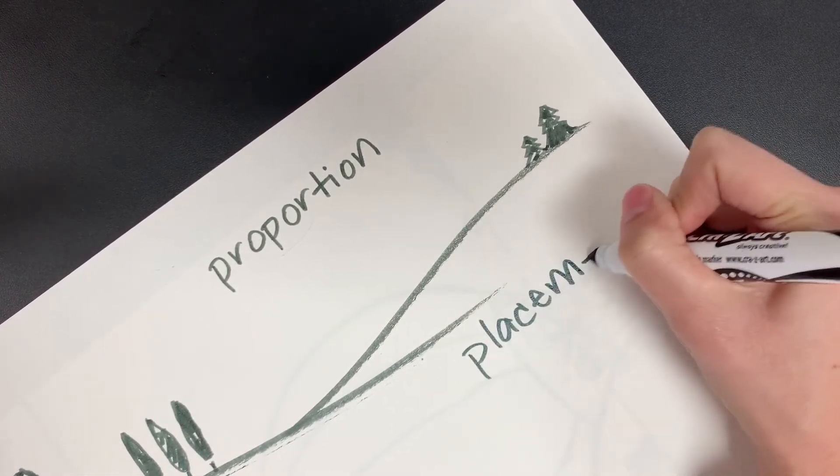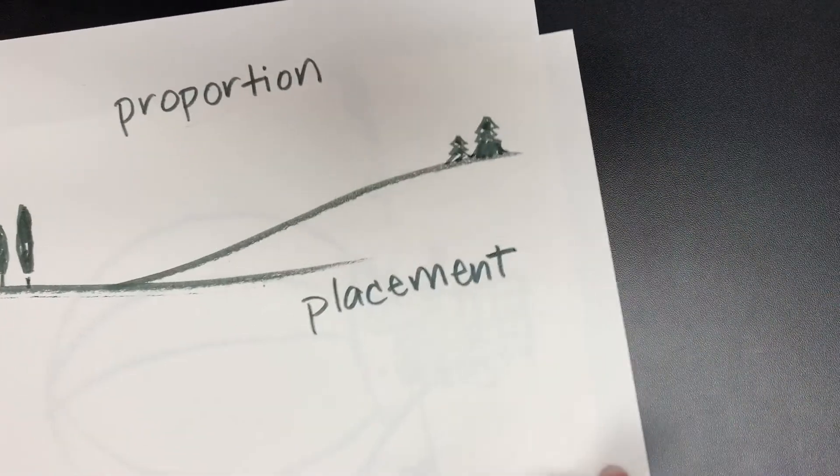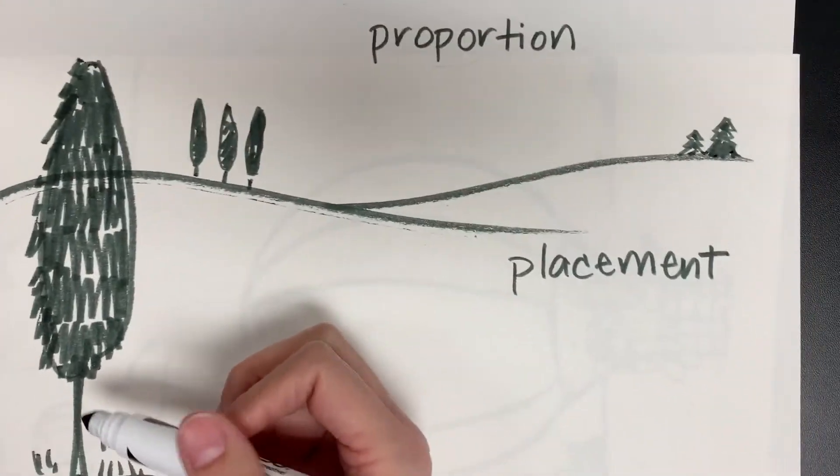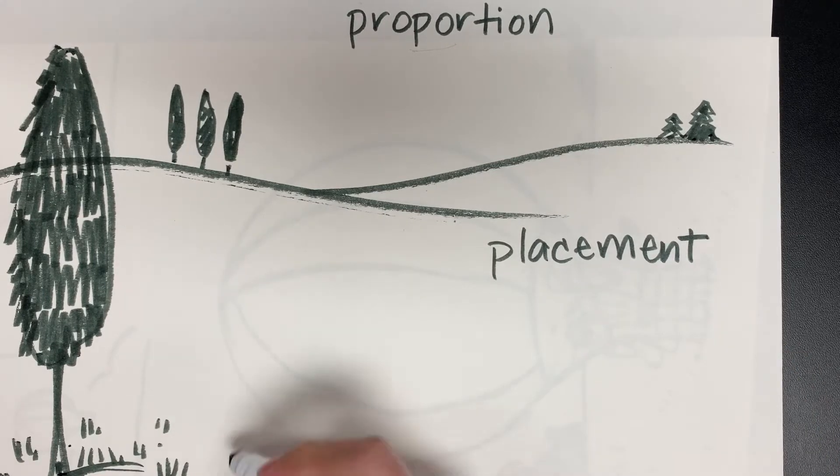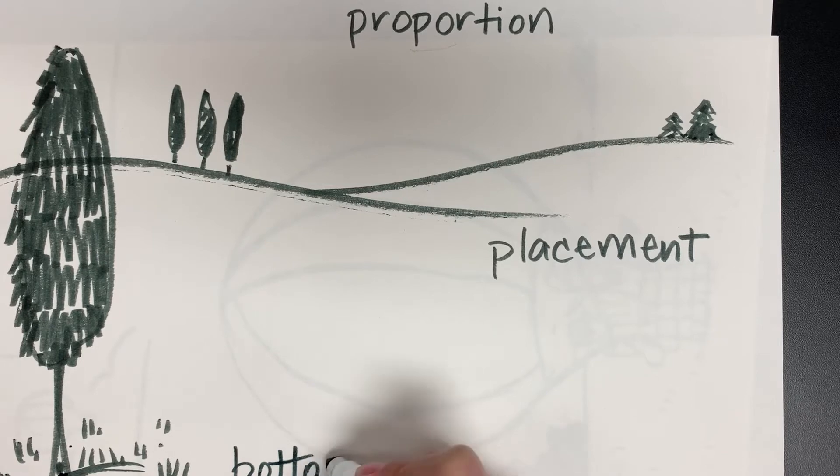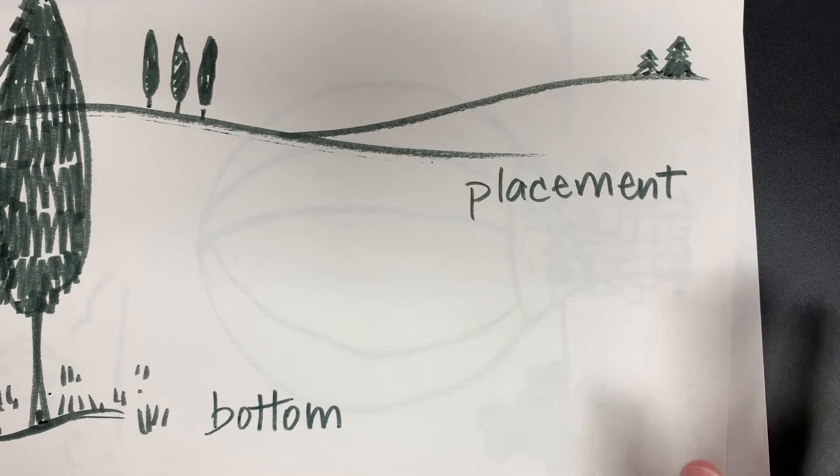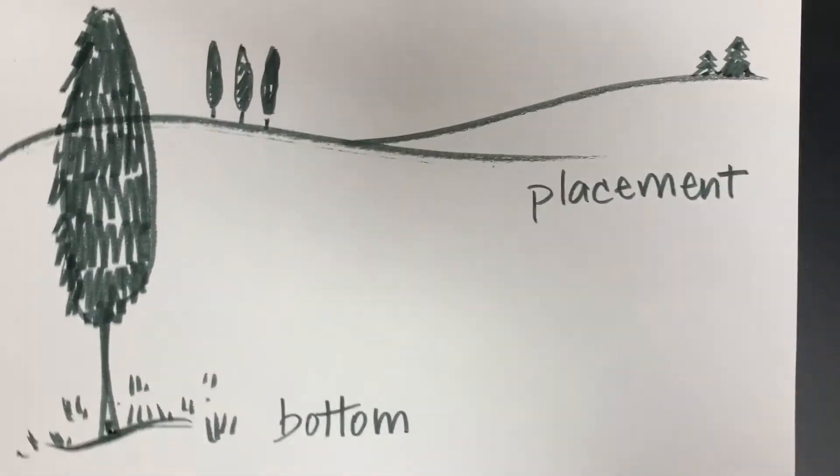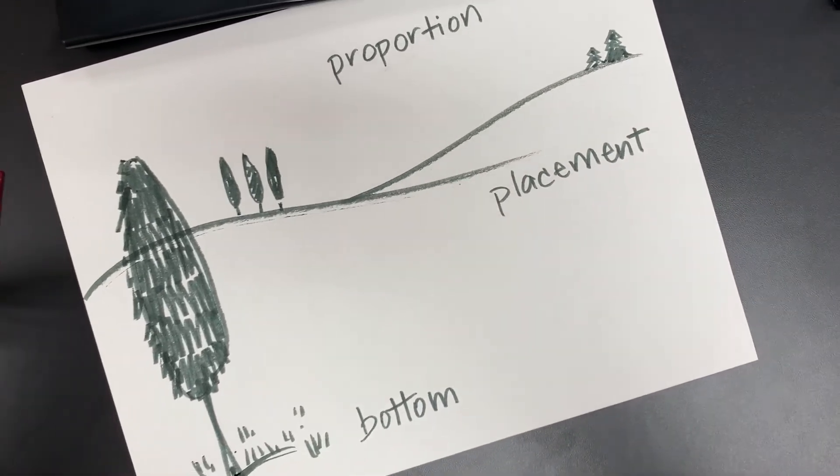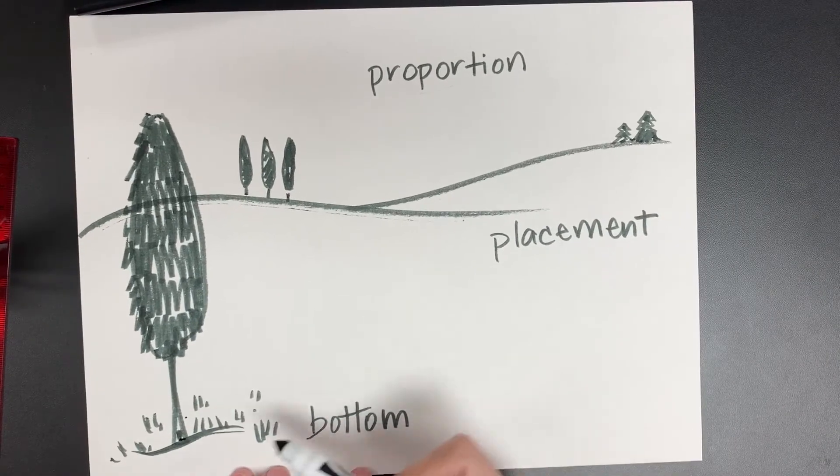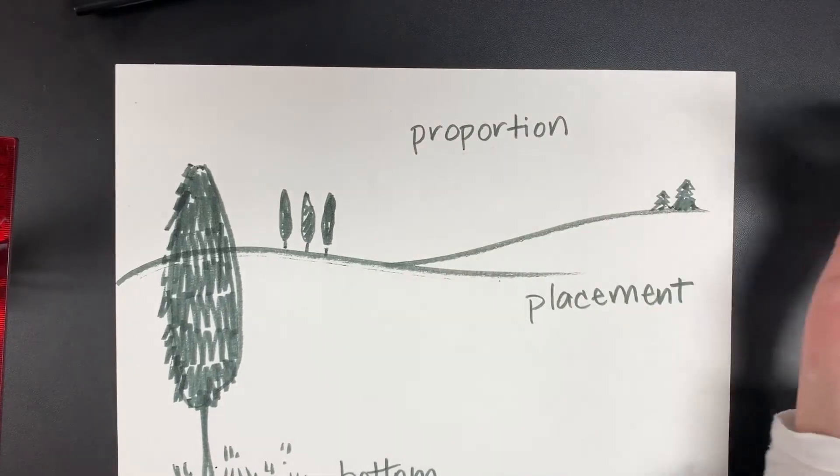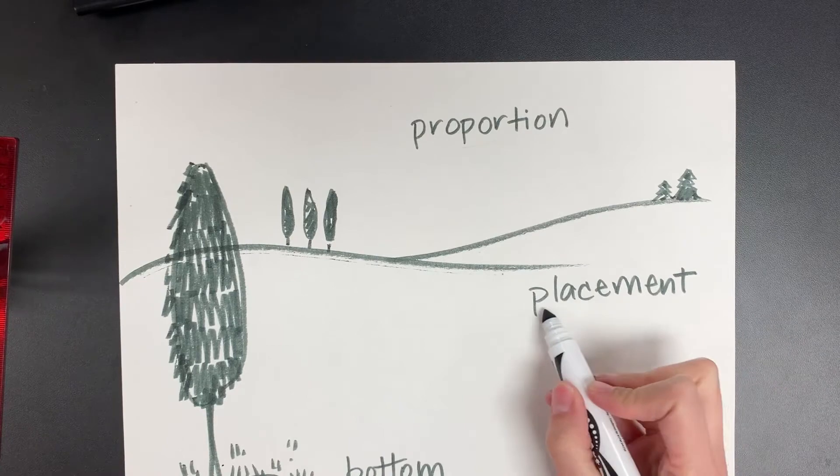Another important word is placement. You've seen me using this word placement an awful lot. Placement has to do with where we put our shapes on the page. If we are drawing, for example, with this tree that's close to us, its placement is near the bottom of our piece of paper or our canvas, if we're painting on a canvas, or a piece of watercolor paper. It's going to be close to the bottom. You're able to see now that my tree is near the bottom of the paper. Things that are far away are close to the middle of the paper. And things that are very far away are usually close to the top of the paper. That's that word placement.